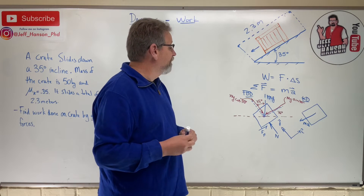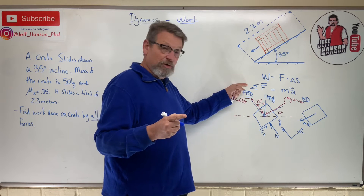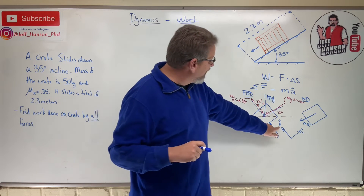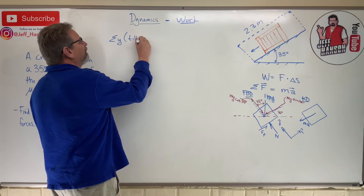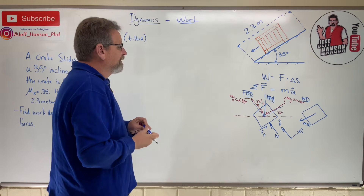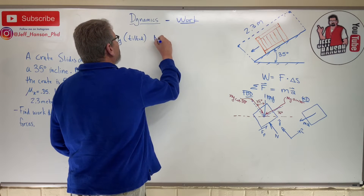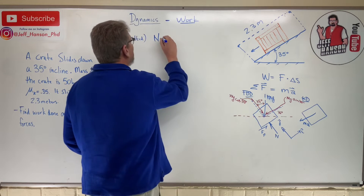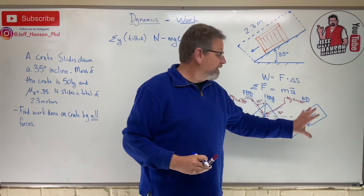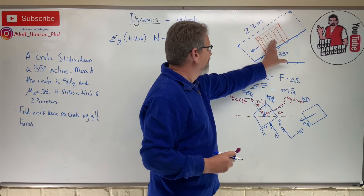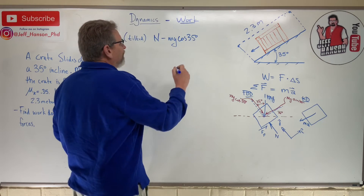With the free body diagram and kinetic diagram set up, let's apply Newton's second law broken into two scalar equations. In the j-hat direction — the tilted y — we have N minus mg cos35 on the force side. On the kinetic diagram side, the box isn't moving in the j-hat direction at all, so that equals zero.